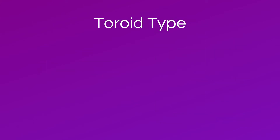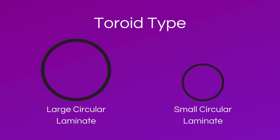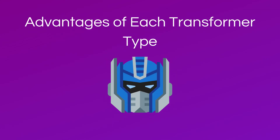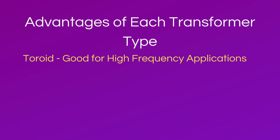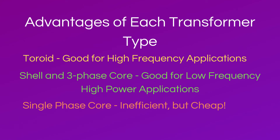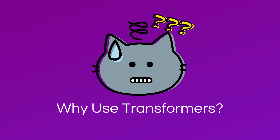The last type of transformer core is the toroid type. It is donut-shaped and uses circular laminates to reduce eddy currents. After the polymer is brushed onto the transformer core, the primary coil is wrapped around it, then an insulator is wrapped around the primary, and the secondary coil is wrapped around that. Toroid transformers are ideal for high frequency applications. Shell type and three phase core transformers are ideal for low frequency, high power applications such as power distribution. Single phase core types, while inefficient due to how far apart the primary and secondary coils are, are the cheapest to make.